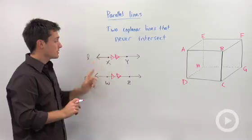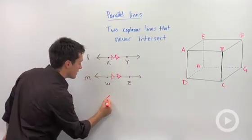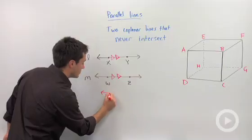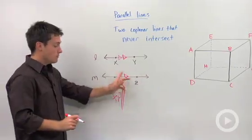But how do I write that? Well, I would start by saying that my line XY, so using arrows on both ends, is parallel to—so we use two big long marks—WZ.